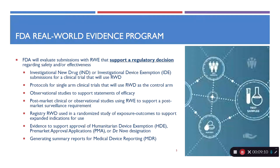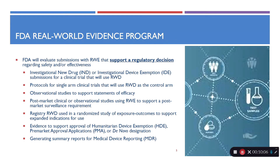FDA will accept real-world evidence for post-market data that meets the requirement for a post-market surveillance study. Sometimes a device or drug will need to be approved with a post-market surveillance requirement, and real-world evidence can be part of meeting that requirement. Registry data can also be used. Real-world evidence can support humanitarian device exemptions, PMAs or de novo designations, and also for generating summary reports for medical device reporting. There are many ways FDA can use real-world evidence in making regulatory decisions about safety and efficacy.